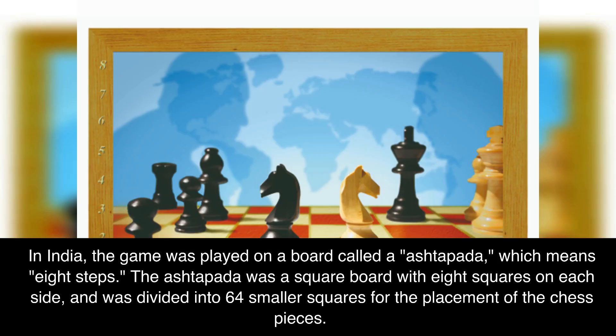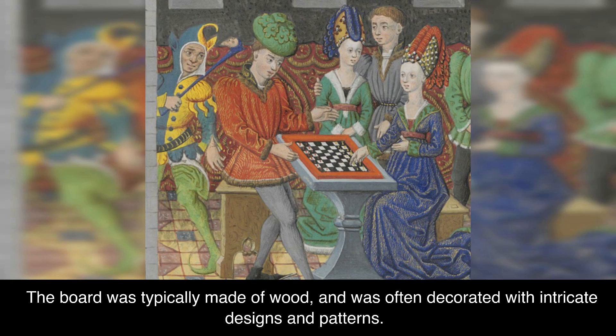In India, the game was played on a board called an Ashtapada, which means 'eight steps.' The Ashtapada was a square board with eight squares on each side, and was divided into 64 smaller squares for the placement of the chess pieces. The board was typically made of wood and was often decorated with intricate designs and patterns.